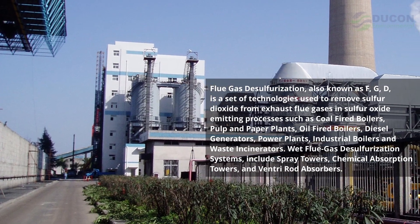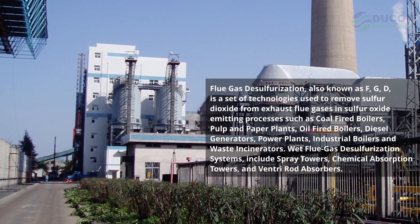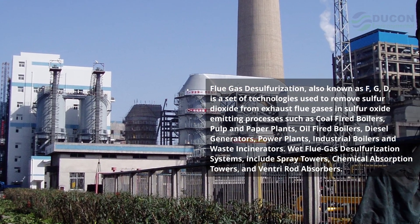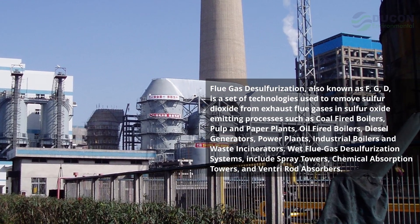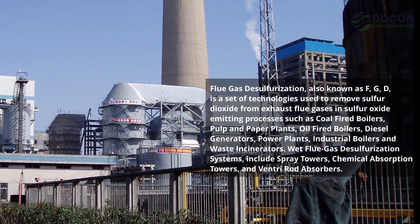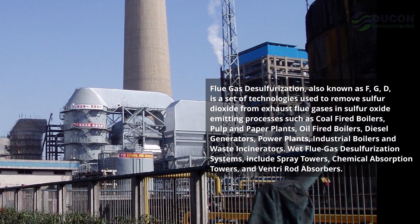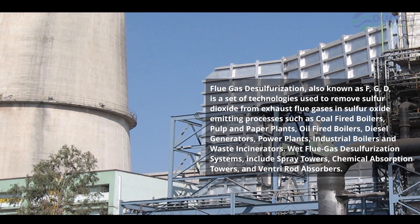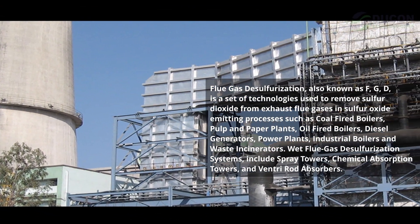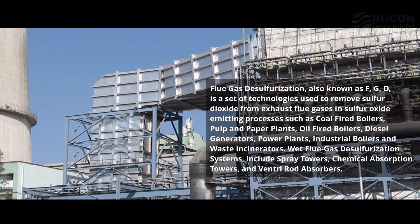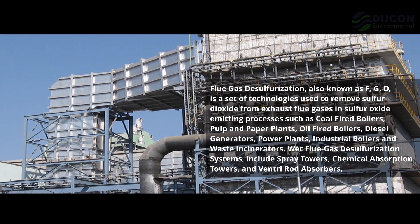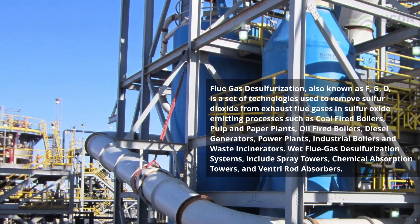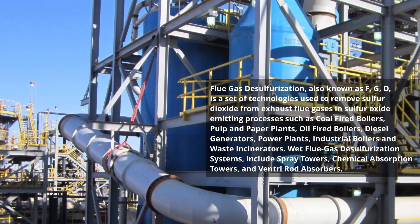Flue gas desulfurization, also known as FGD, is a set of technologies used to remove sulfur dioxide from exhaust flue gases and sulfur oxide emitting processes such as coal-fired boilers, pulp and paper plants, oil-fired boilers, diesel generators, power plants, industrial boilers, and waste incinerators. Wet flue gas desulfurization systems include spray towers, chemical absorption towers, and venturi rod absorbers.